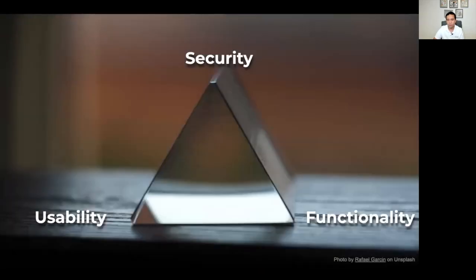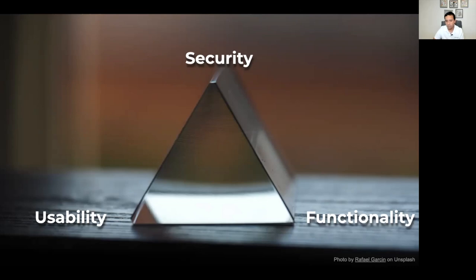When identifying policies, I first capture our business objectives and what we're trying to accomplish. This triangle comes to mind: we're trying to achieve a balance of security while making sure usability and functionality are not affected. The most secure system is probably not going to be usable — killing all network traffic is maximally secure but useless. Removing password requirements is maximally user-friendly but not secure. We always want to strike a balance where business objectives are accomplished without compromising on security.